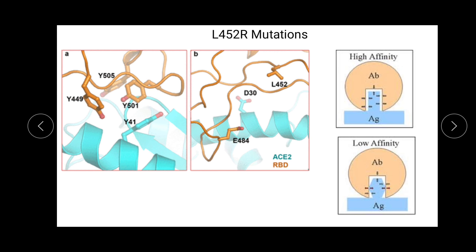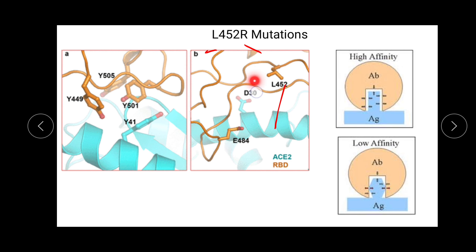Moving to the next mutation, L452R: here a hydrophobic amino acid — leucine (L) — has been changed to a hydrophilic amino acid — arginine (R). This is a major change. L452 does not directly interact with the ACE receptor, but it forms a hydrophobic pocket. The ACE receptor directly interacts with residues like Y41, so changing Y501 would dramatically increase or decrease ACE binding, but L452 has a significant though somewhat lesser effect on binding affinity.